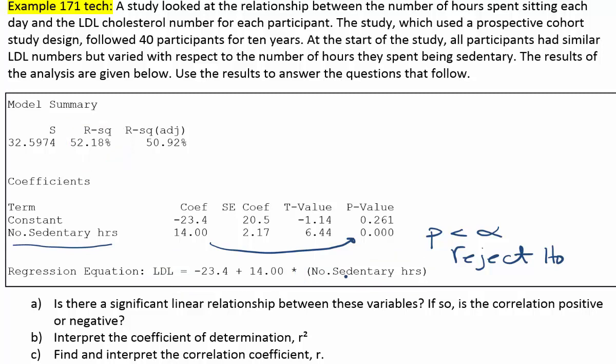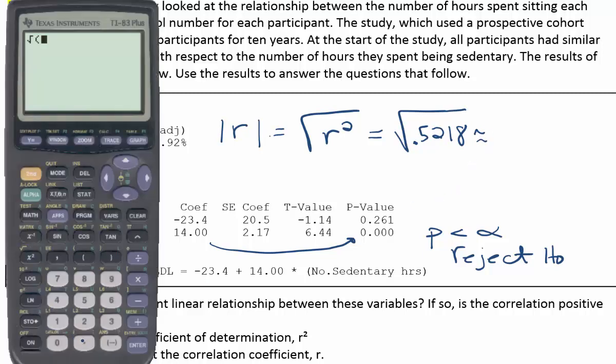Let's look at part C. It says find and interpret the correlation coefficient r. We don't have r, but they do give us r squared. And in this simple model, we can simply say that the absolute value of r is equal to the square root of r squared. So in other words, if I want to know the absolute value of r, I just take the square root of, in this problem, 0.5218, which is just r squared written as a decimal. Let's work that out and see what it comes up to be. So we'll take the square root of 0.5218.